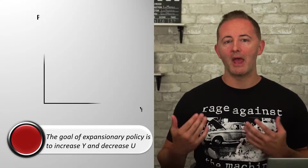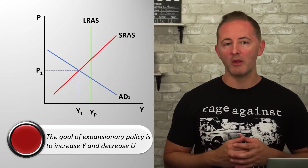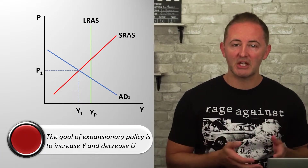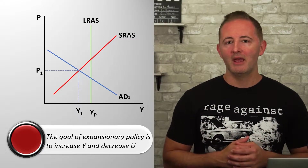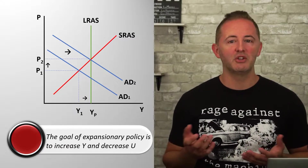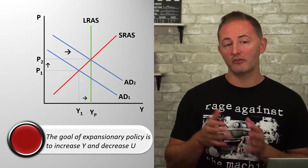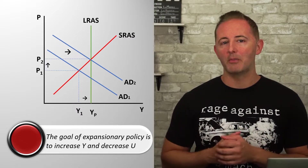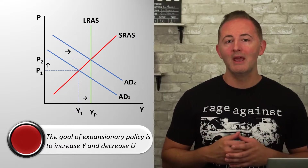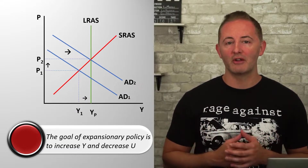Expansionary fiscal policy and expansionary monetary policy both have the same purpose: to increase output and reduce unemployment. So they should both be used when there is a recessionary or negative output gap. They both affect the AD-AS model the same way, by shifting the AD curve to the right, closing the negative output gap, and bringing the economy back to potential output and the natural rate of unemployment.